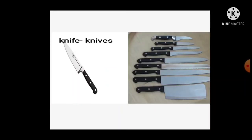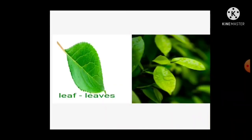Some nouns ending in F or FE change into VES. Cut F or FE and put VES for plural. Knife — knives (FE cut, put VES). Leaf — here F only comes, so F cut and put VES — leaves.